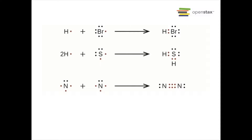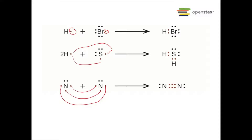Here are some simple structures where you don't need all those steps — you can look at their Lewis symbols and directly see where bonding occurs. For hydrogen bromide, you can see immediately where they bond. For H2S, you have two extra hydrogen electrons bonding with sulfur. For N2, two nitrogens give an instant triple bond.